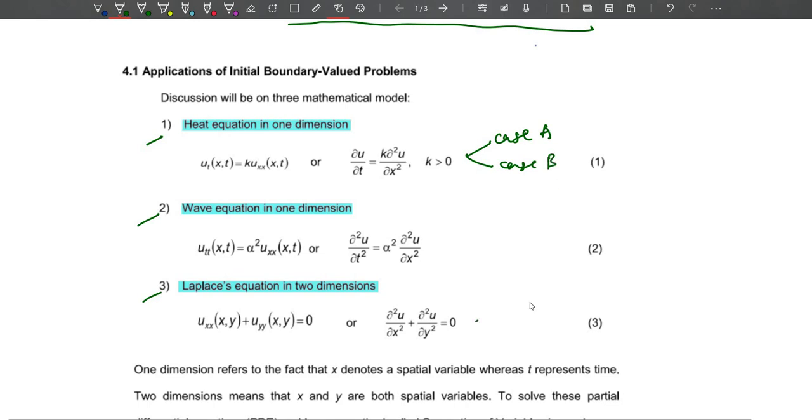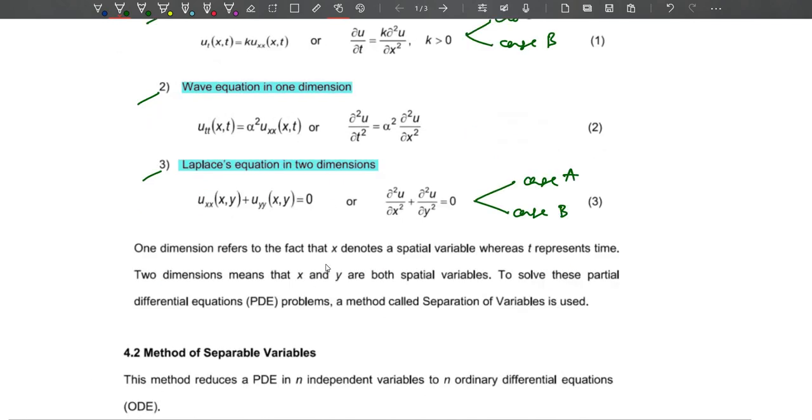One dimension here refers to the fact that x denotes a spatial variable whereas t represents time. But two dimensions means that x and y are both spatial variables. To solve these partial differential equations, a method called separation of variables is used.